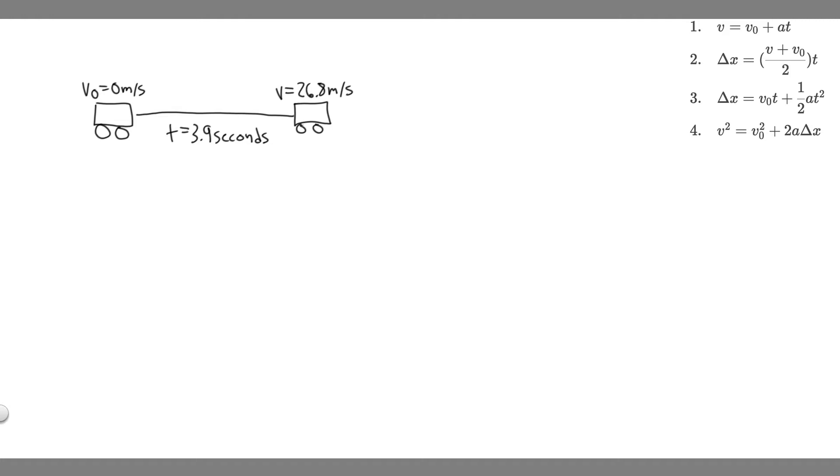The first thing you always want to do in solving these problems is to draw what's going on. So we have this motorcycle, and it's going to start at rest. That means its initial velocity is going to be equal to zero, because if something's at rest, it's not moving, so its velocity is zero. It's going to travel for 3.9 seconds, and it's going to eventually reach a speed of 26.8 meters per second.